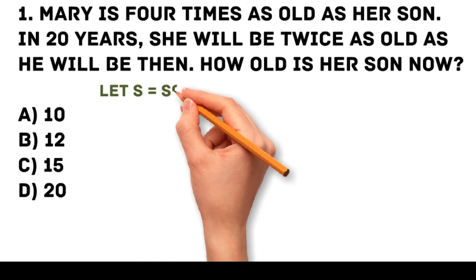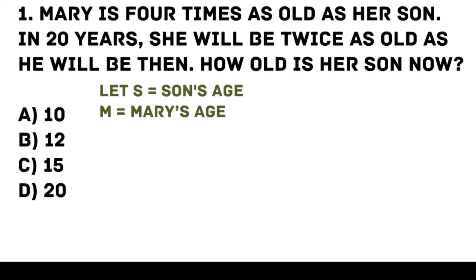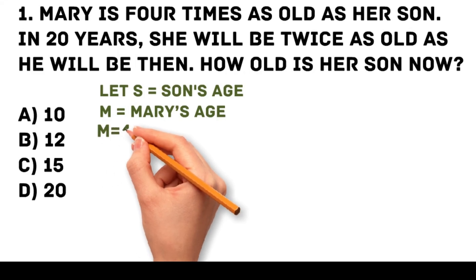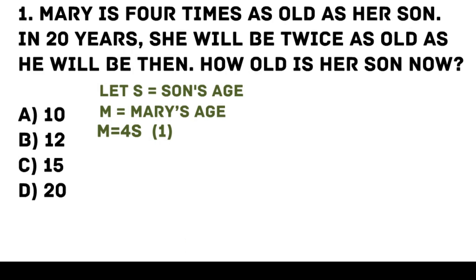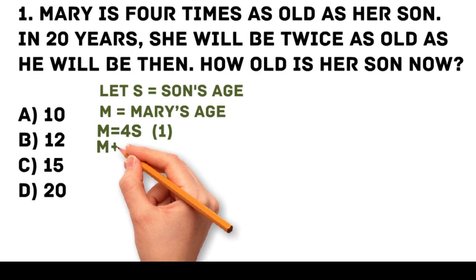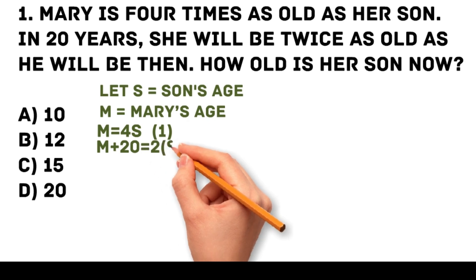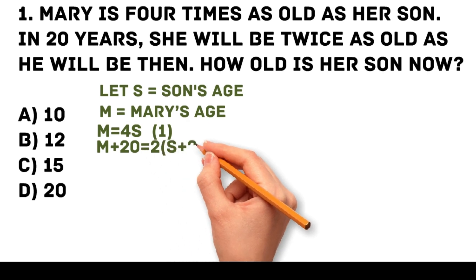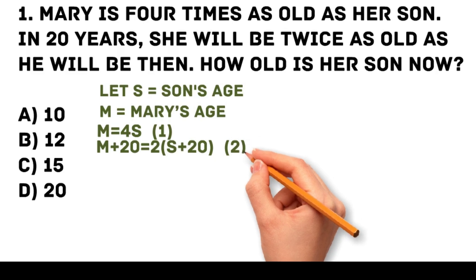Let s be the son's age and m be Mary's age. Given that Mary is 4 times as old as her son, therefore m equals 4s — let this be the first equation. And in 20 years, she will be twice as old as her son will be then: m plus 20 equals 2 times (s plus 20) — let this be the second equation.